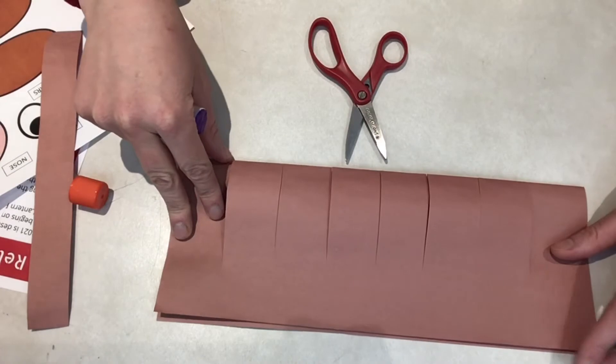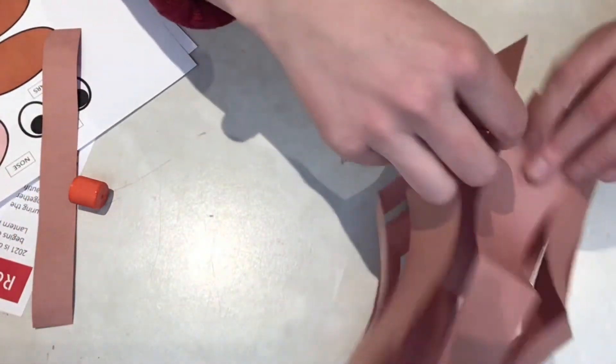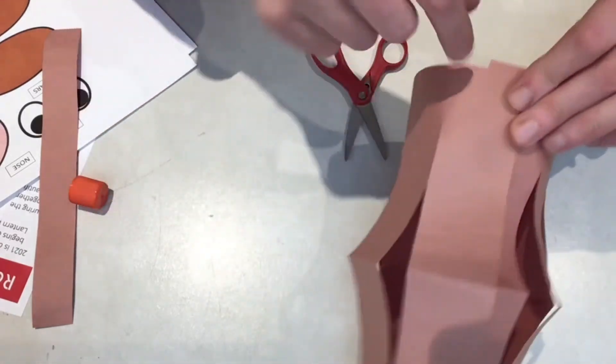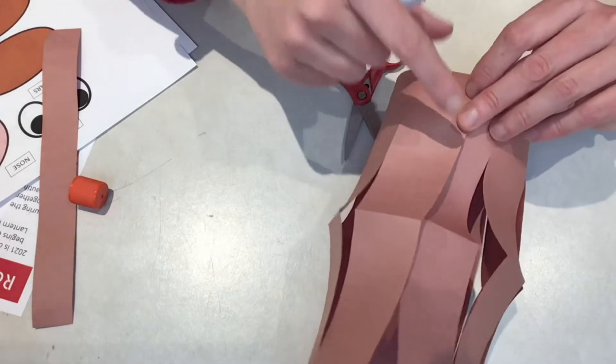Once you've cut your strips, open it up and then you're going to make it into a circle and you're going to put glue here and here so it stays together and has a lantern shape.